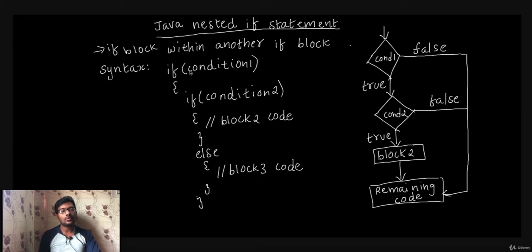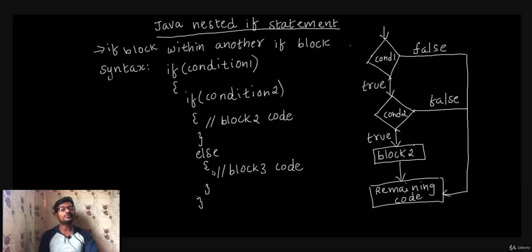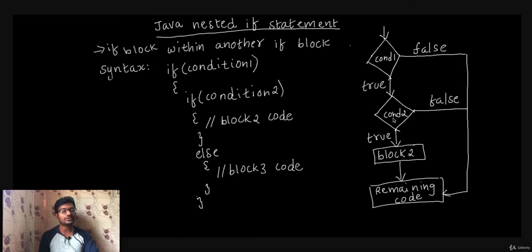In syntax, if the outer condition is satisfied, the next condition is checked. If the next condition is also satisfied, then finally the block of code will be executed. We also have a specific flow diagram for this case.